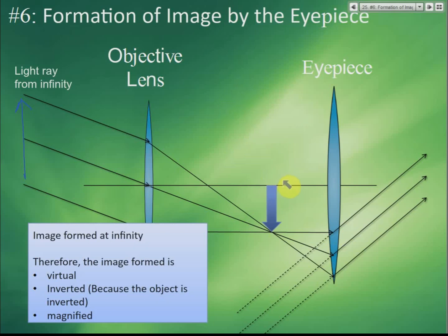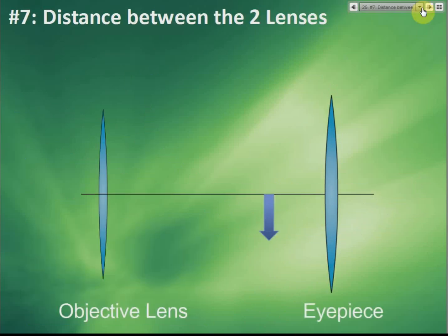For a normal astronomical telescope, the image formed is inverted, so you shouldn't use it for sightseeing.